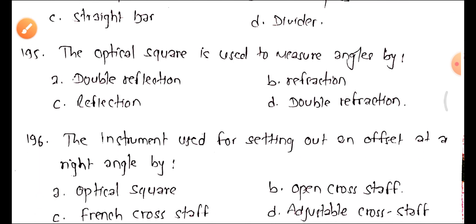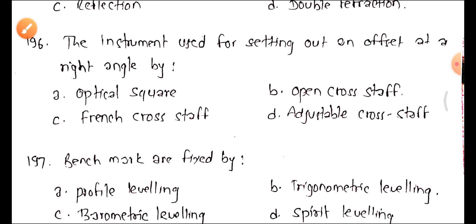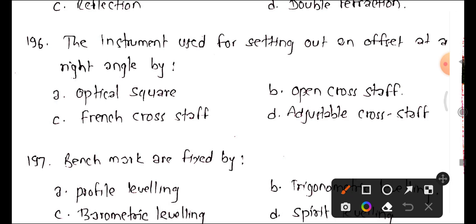Question 195: The optical square is used to measure angle by reflection. Question 196: The instrument used for setting out an offset at a right angle is the cross staff.